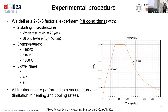We performed nine different thermal treatments with two different starting microstructures: three temperatures and three times. All treatments were performed in a vacuum furnace, which has certain limitations regarding the heating and cooling rates. The heating rate of all our treatments was limited to 4°C per minute, and the cooling rate until 600°C is limited to 2.3°C per minute.